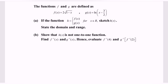Hello everyone, welcome to my channel. In this video, I'm going to discuss the example for function and graph. So given the functions f and g are defined as follows: f(x) is 2 multiplied with the square root of 1 minus x, and g(x) is equal to ln of the bracket x minus 3 over 2.